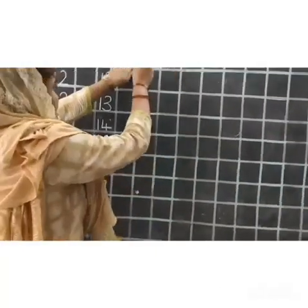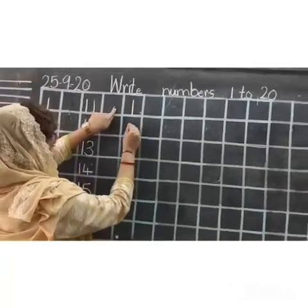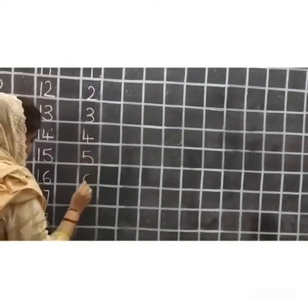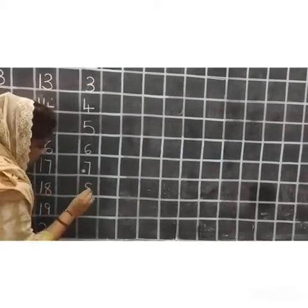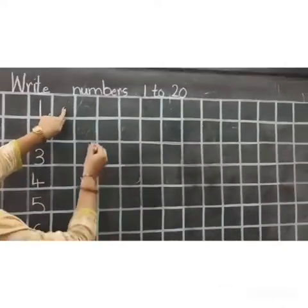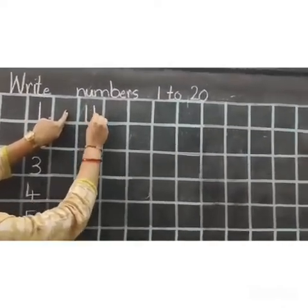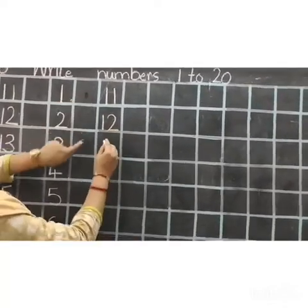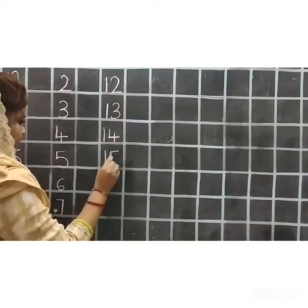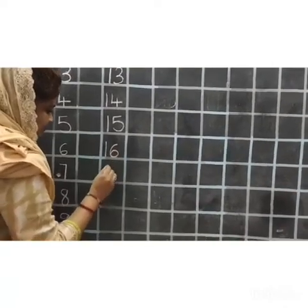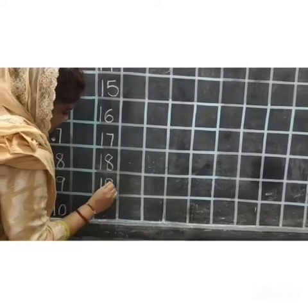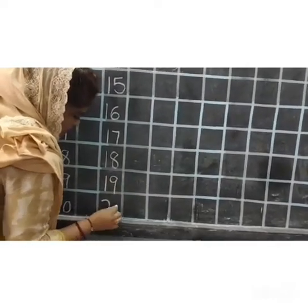Now, get the date box. I write 1, 2, 3, 4, 5, 6, 7, 8, 9, 10. After 10, you have to write 11, 12, 13, 14, 15, 16, 17, 18, 19, 20. Like this.